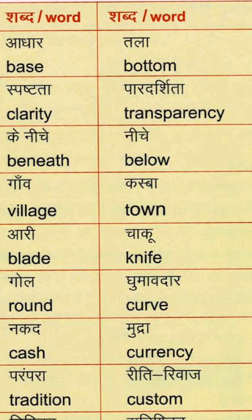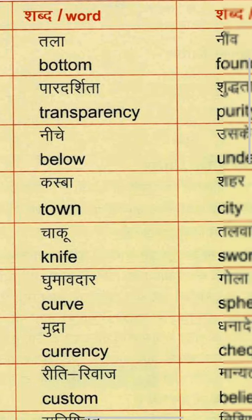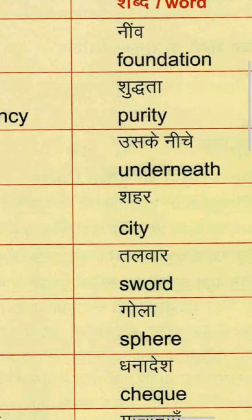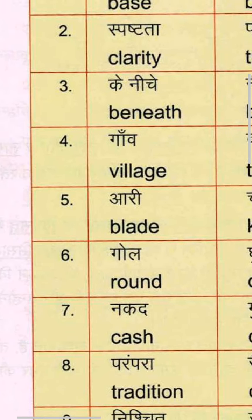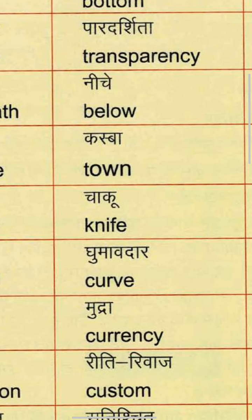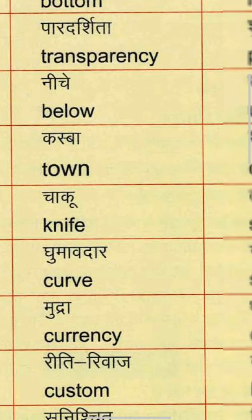Second group: Spashta, which is Clarity — C-L-A-R-I-T-Y. Parthdarshita means Transparency — T-R-A-N-S-P-A-R-E-N-C-Y. And Shudda means Purity — P-U-R-I-T-Y.